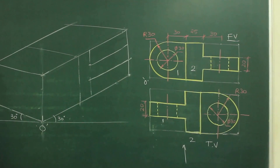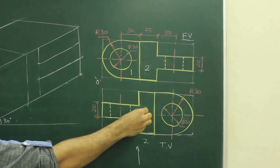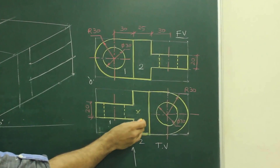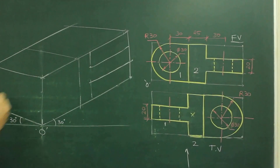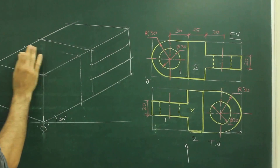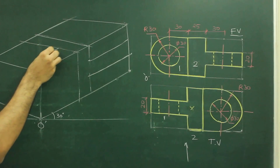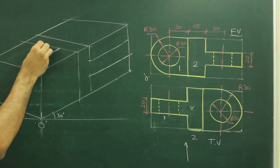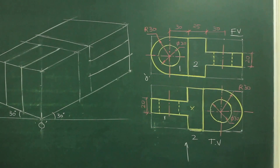Now if you see the top view, in the top view also there are two parts — part X and part Y. Part X is merging with part 2, see over here. So I can draw part X first. I need to extend this line, and this line as well. Then I will mark 20 again, and mark 20 again. I am going down.